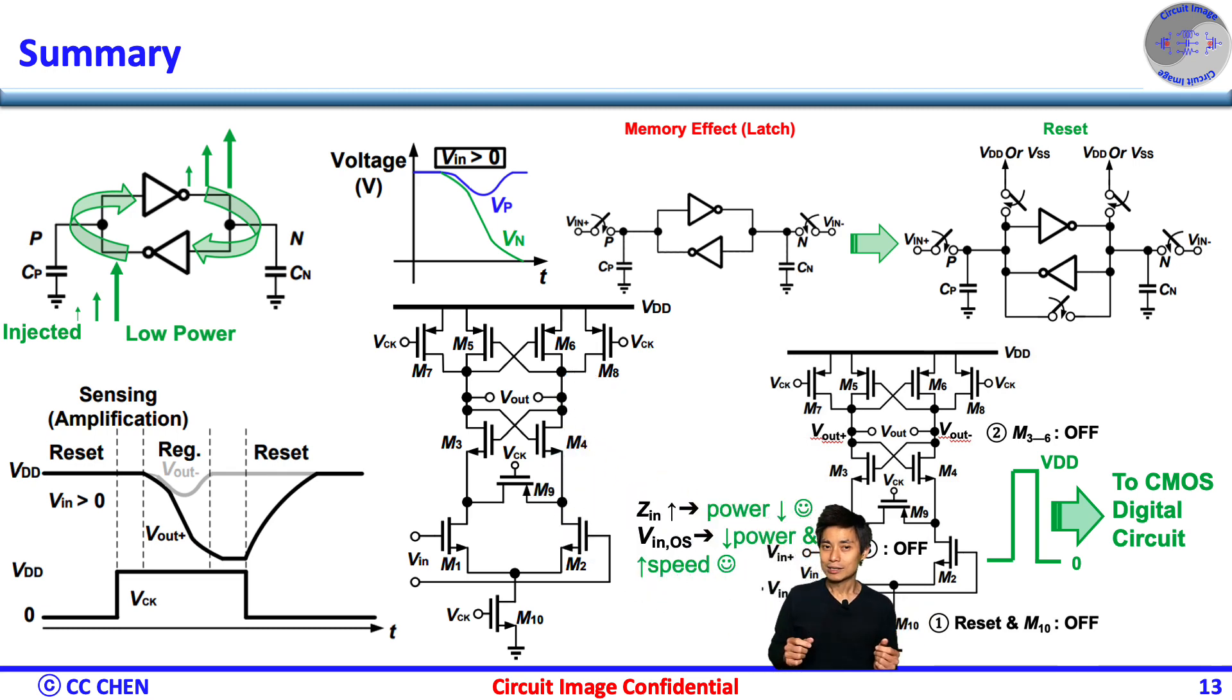From these images, we know that three phases operate sequentially without DC path. Therefore, the first advantage is no static current and the power could scale well with the data rate as other digital CMOS circuits with CVF current, which beats the CML latch's static DC current a lot.